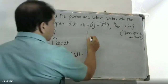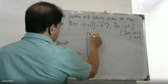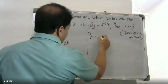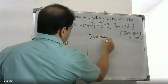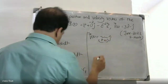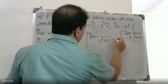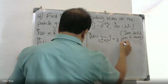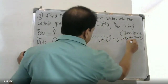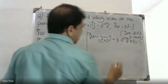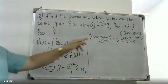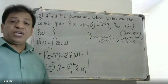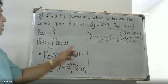Therefore, v of t is equal to minus 1 by t plus 1 into j, plus 1 by 2 e raised to minus 2t into k, plus constant C1. The velocity vector includes constant C1 to be determined.